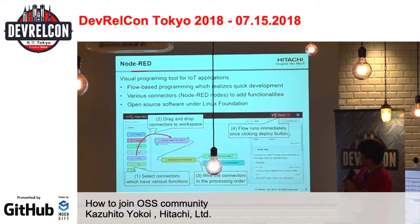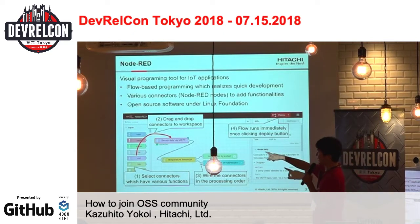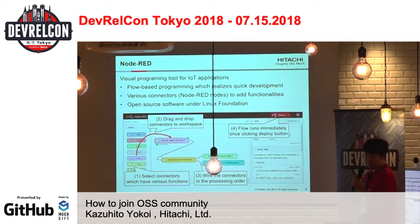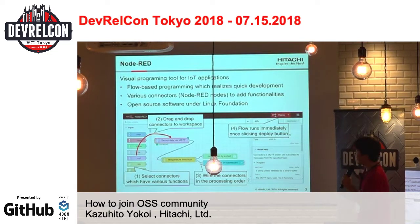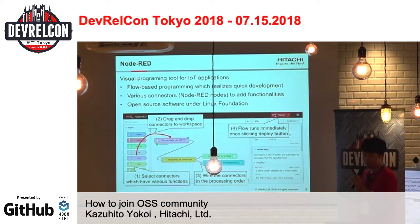In this slide, I'd like to explain about the open source software Node-RED. This is the screenshot of the flow editor. On the left side, there are a lot of connectors, and the engineer selects the software, then drags and drops the connector to the central workspace. And then they wire the connectors in the processing order. Once clicking the deploy button, the flow will run immediately. Because of flow-based programming, it realizes quick development without coding. In the Node-RED project, there are various connectors to add new functionalities. And importantly, Node-RED is open source software under the Linux Foundation project, so it is a very open project on the internet.